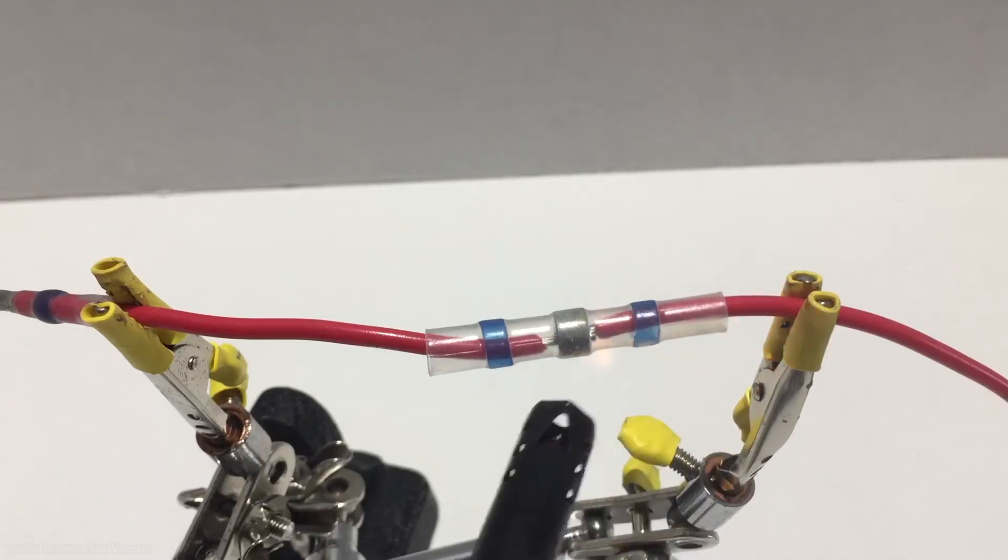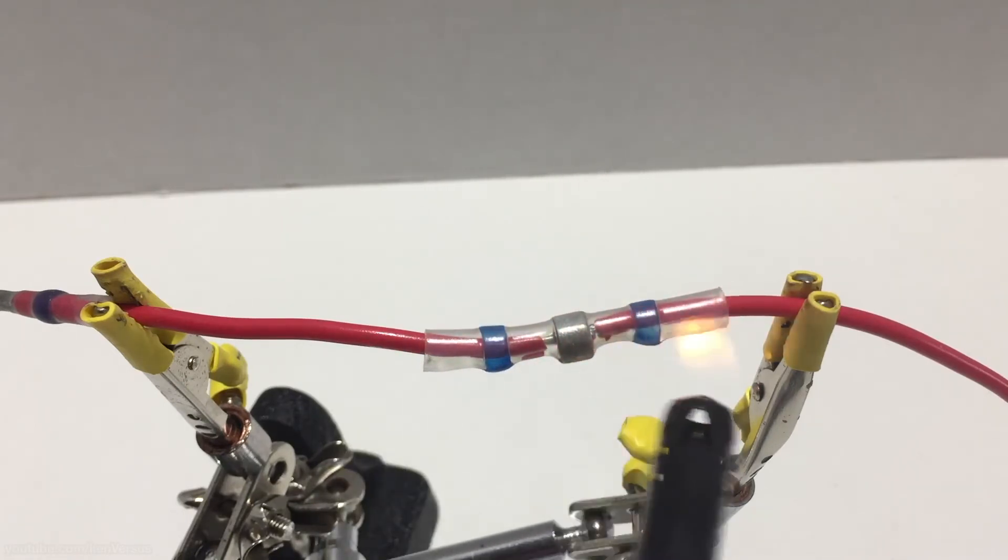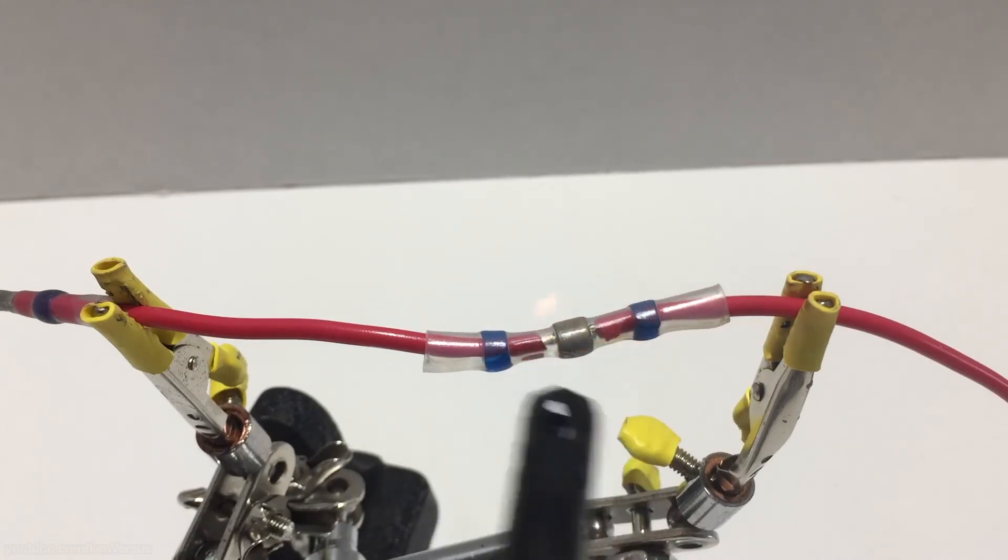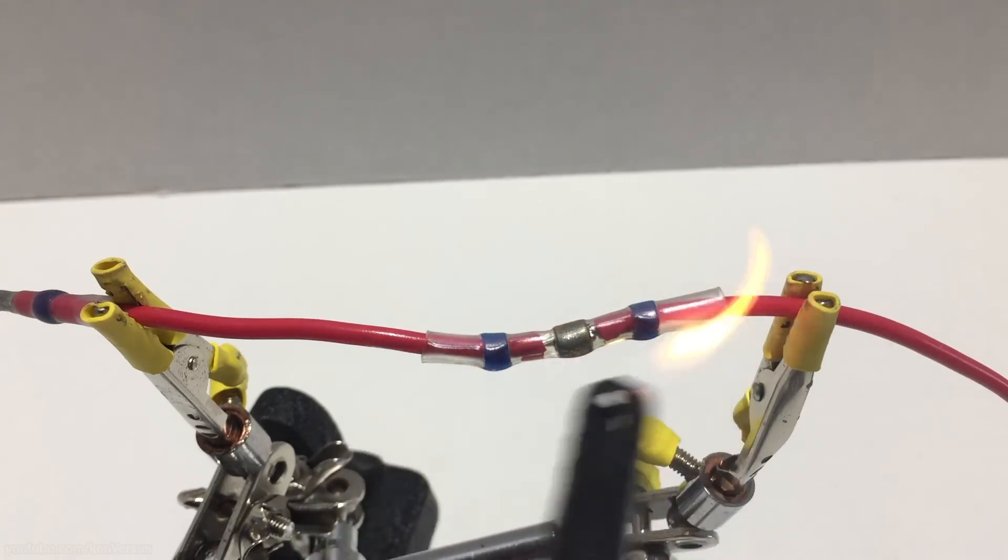Now all you have to do is heat the sleeve with a heat gun, a candle, or a lighter. Make sure that you move the heat source back and forth so you're not in one place, or else you're going to melt the sleeve and the plastic. And stop when the sleeve shrinks to cover the joint and that's it.